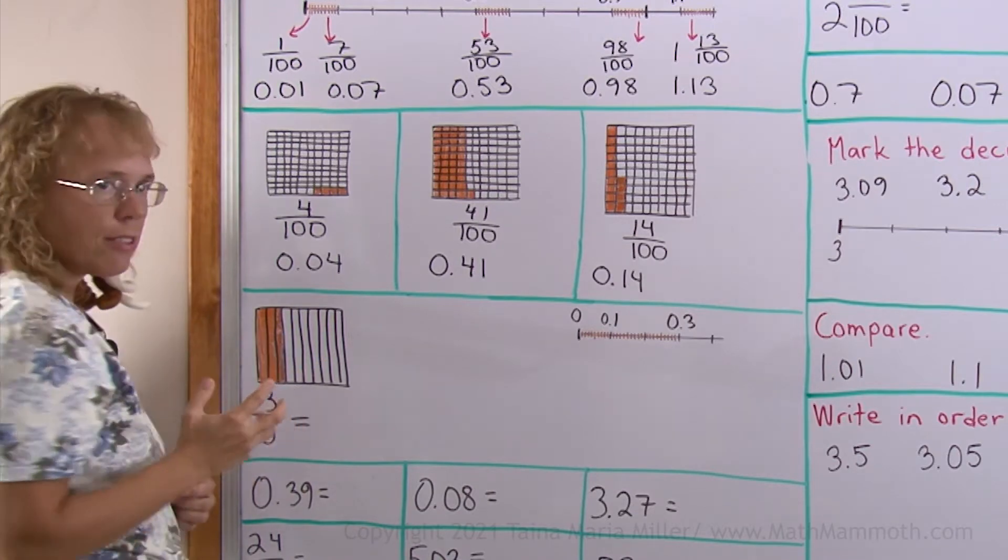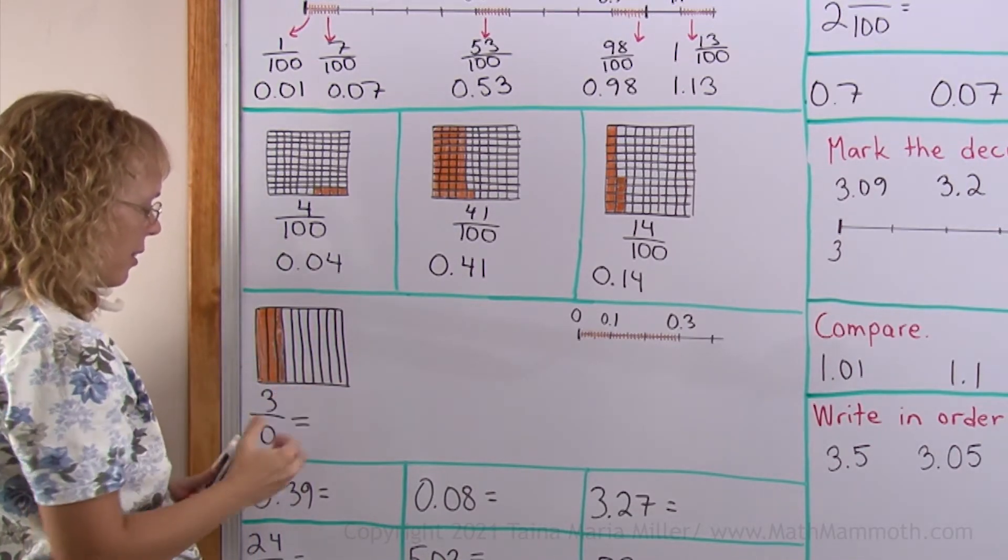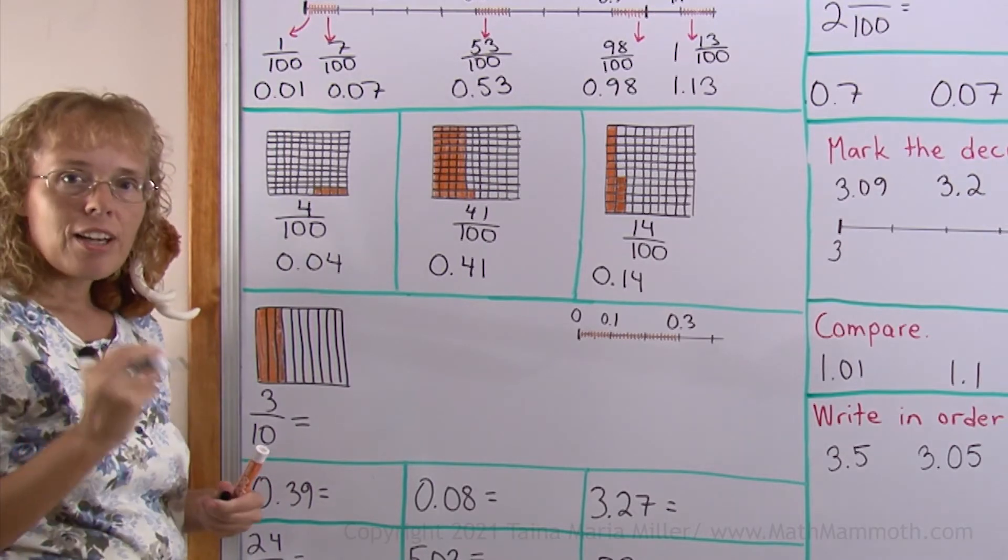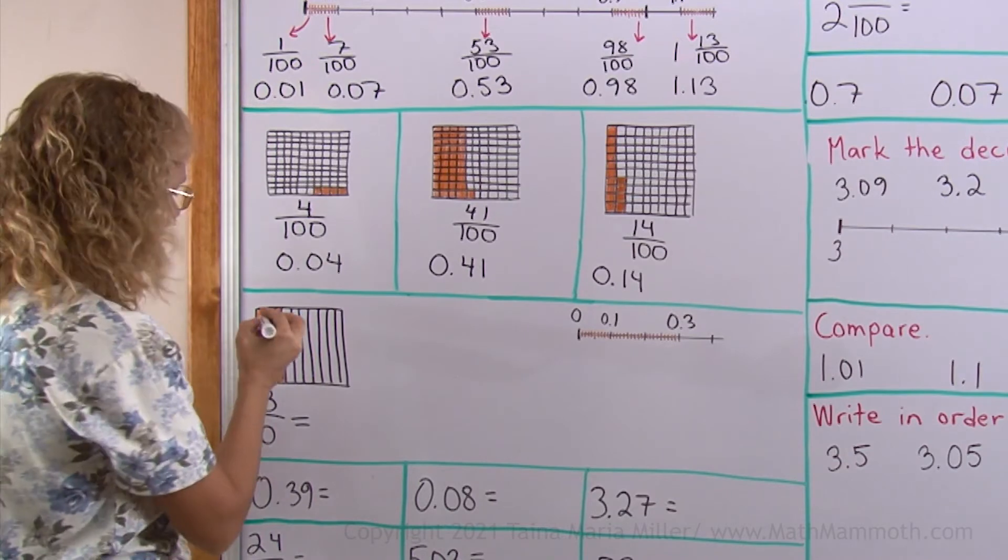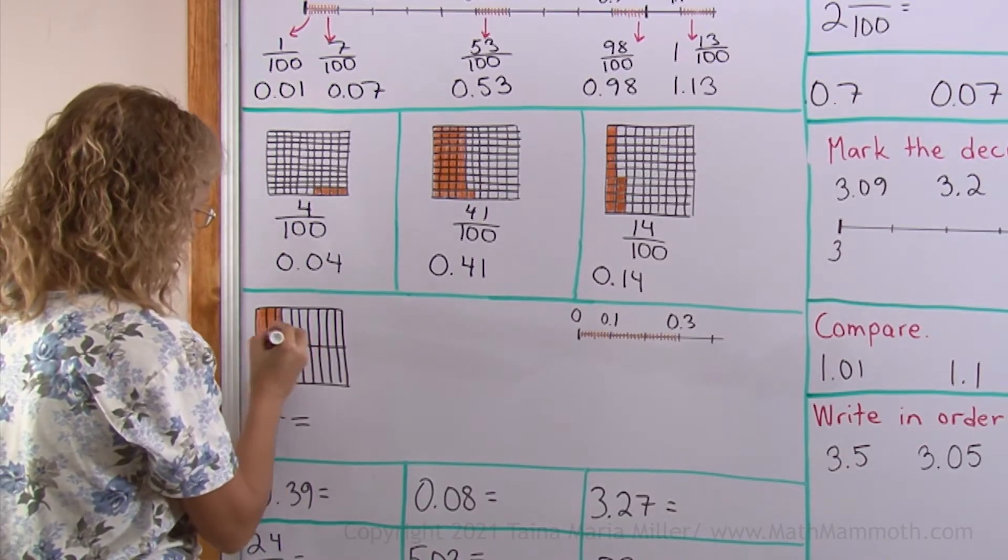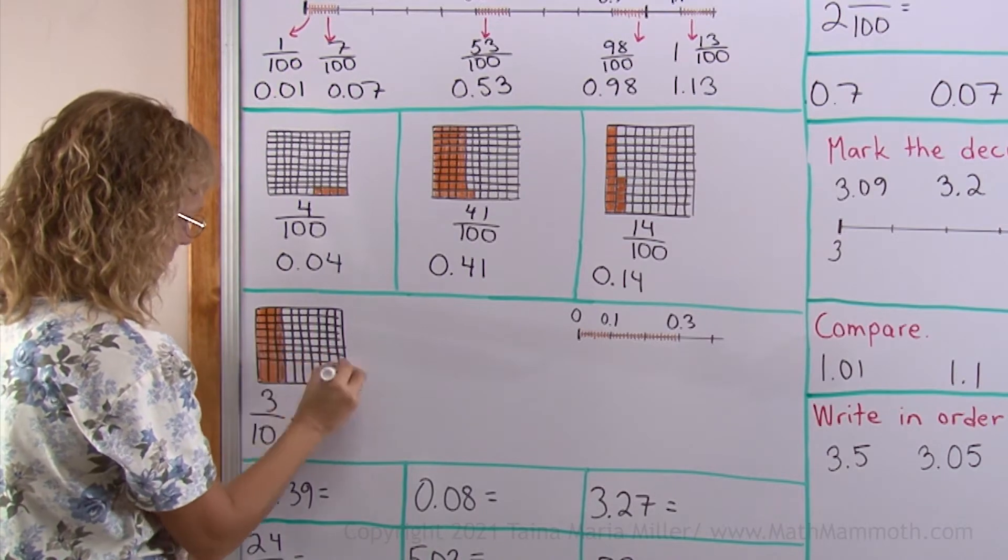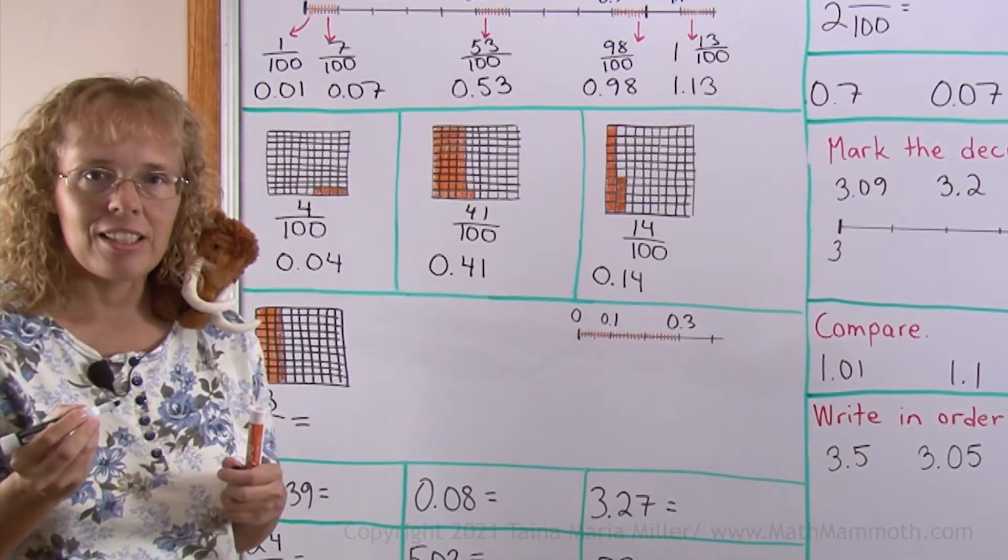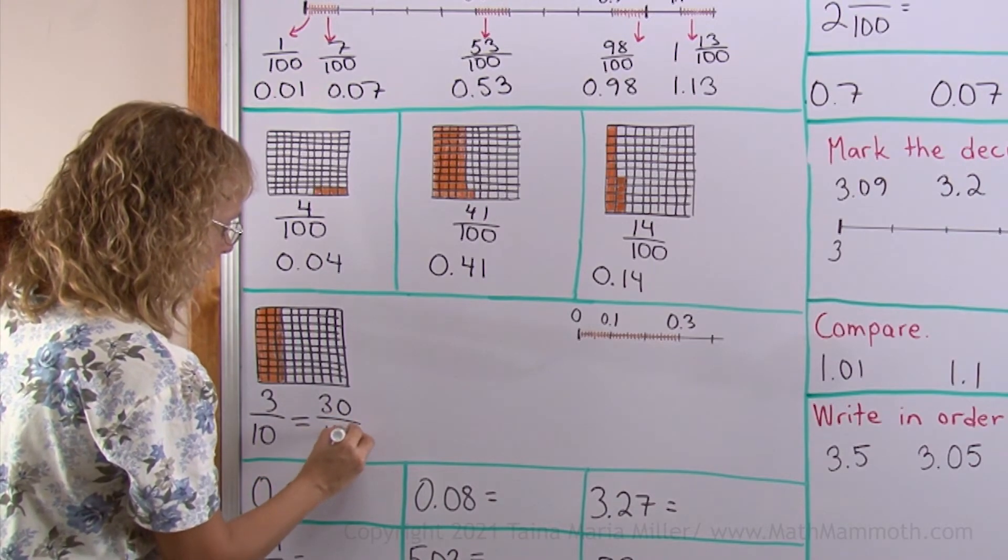Let's look at 3 tenths. This picture shows us 3 tenths. But if I divide it further, you will see it is also 30 hundredths. Let's say I divide it into hundredths. See? There we go. It's divided into hundredths now, so it is also 30 hundredths at the same time.